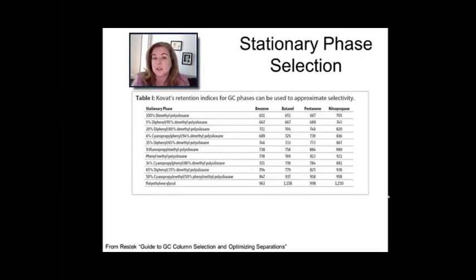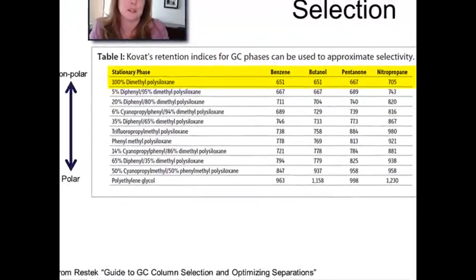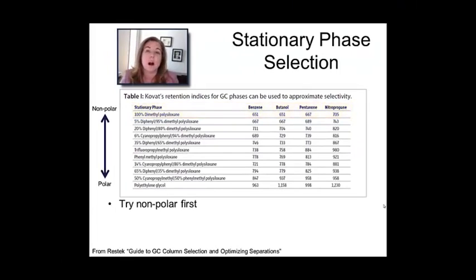Let's first talk about stationary phase selection. We went over this in the last lecture, so I'll just hit it quickly. This is a different approach. You see a lot more column materials listed. You can buy columns made with any of these stationary phases. What you're looking at is kind of a normalized retention index that helps you compare how those columns may behave with different kinds of analytes. Starting at the top, that's the most non-polar. Going to the bottom is the most polar. Usually if you're doing a separation, you should start with your most non-polar columns.